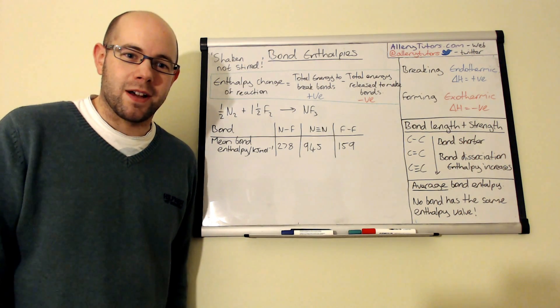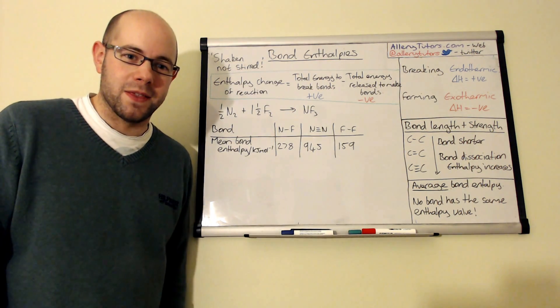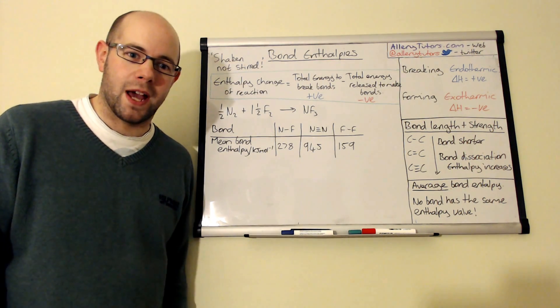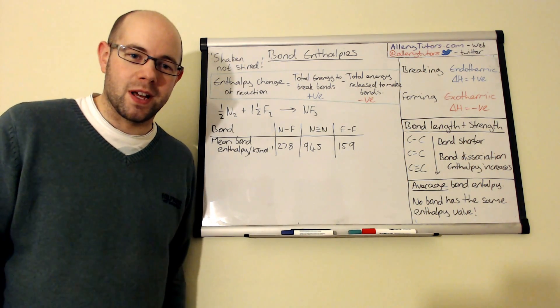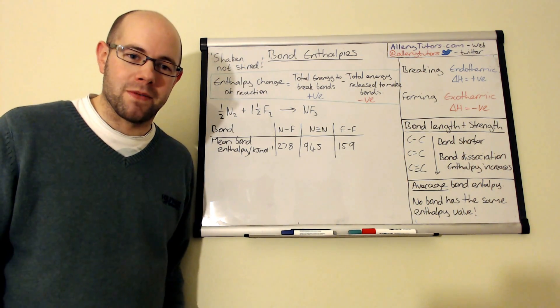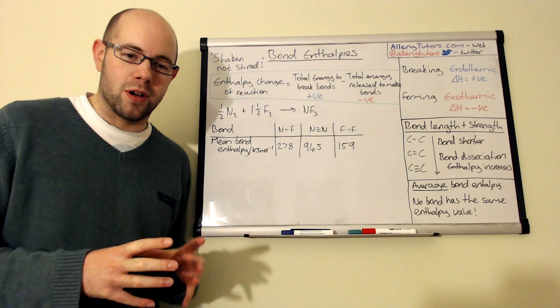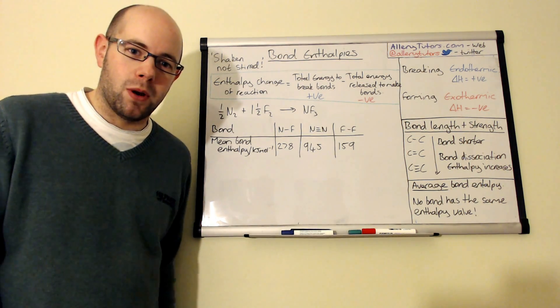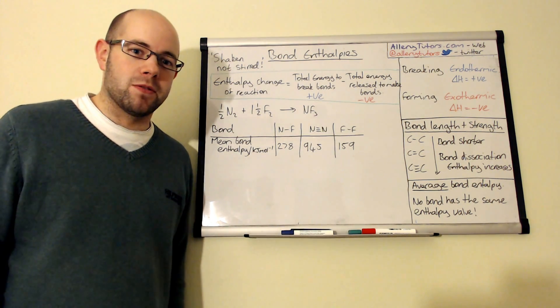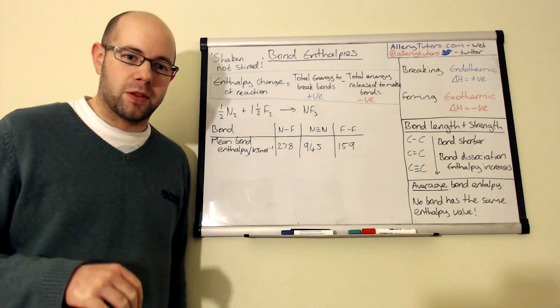Hi there, my name is Chris Harris and I'm from AloeTutors.com. In this video we're going to look at bond enthalpies. Bond enthalpies, as the name suggests, is the amount of energy that is either used up or given out per mole of bond, and we're going to look at something called average bond enthalpy.